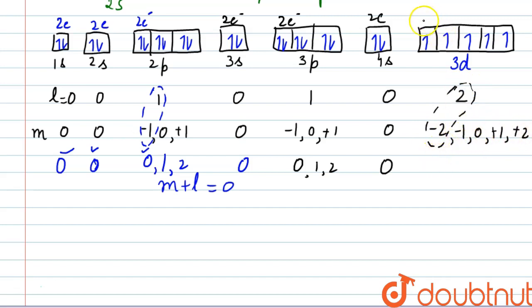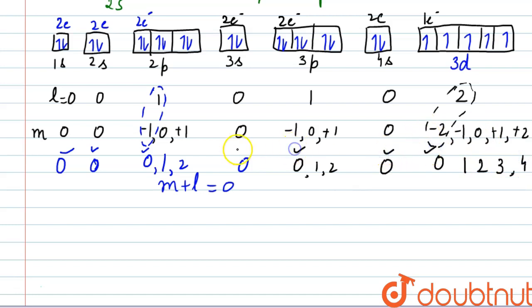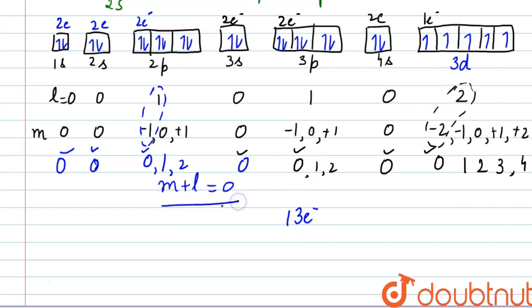Counting the electrons: 2 from 1s, plus 2 from 2s = 4, plus 2 from 2p = 6, plus 2 from 3s = 8, plus 2 from 3p = 10, plus 2 from 4s = 12, plus 1 from 3d = 13. So 13 electrons have the M plus L value equal to zero.